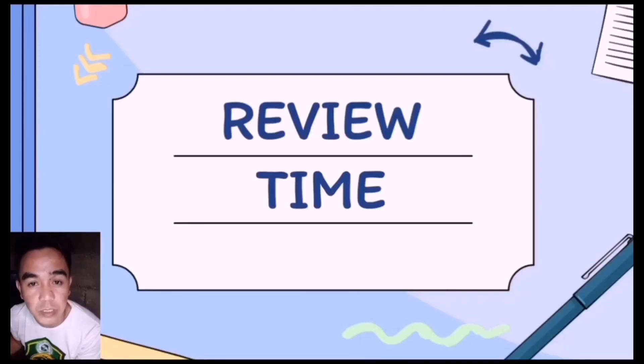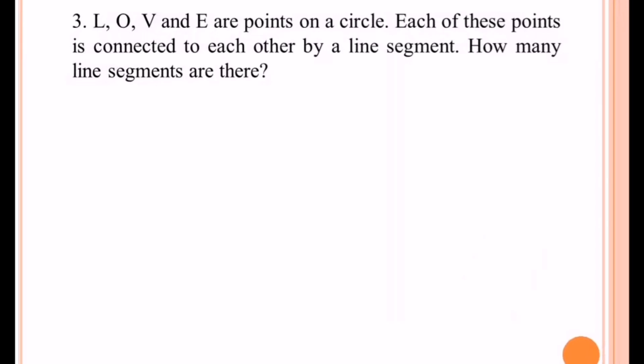It's review time. Problem 3 is a recreational problem. We have L, O, V, and E, or LOVE, are points on a circle. Each of these points is connected to each other by a line segment. How many line segments are there?